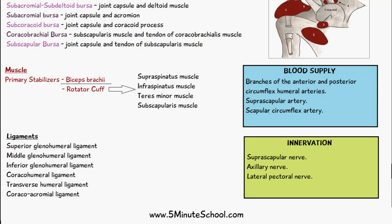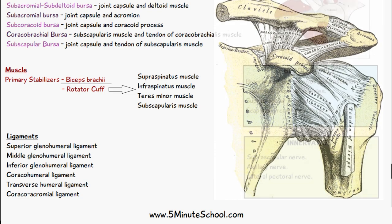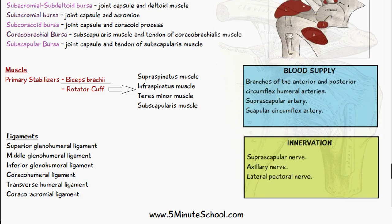The ligaments involved in the shoulder joint include the superior, middle, and inferior glenohumeral ligaments. We also have the coracohumeral ligament, the transverse humeral ligament, and the coracoacromial ligament.